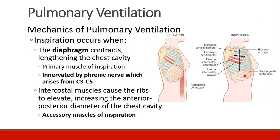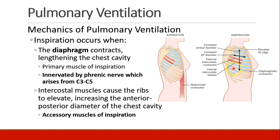Accessory muscles of inspiration are the intercostal muscles. They are between each of the ribs, and when they contract, they bring the ribs into a more horizontal position, which increases the AP diameter — the anterior-posterior diameter. All of these actions make the chest cavity larger in volume, creating a negative pressure which draws air into the mouth and down into the lungs.